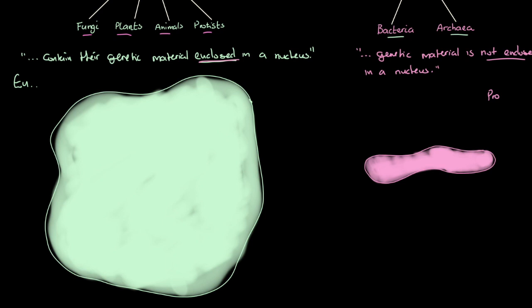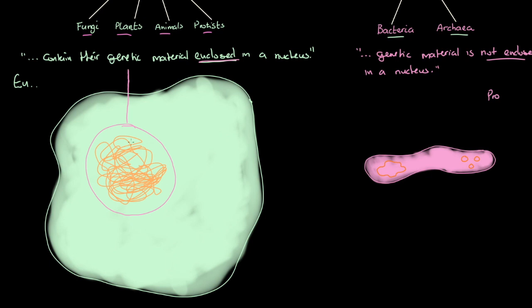At this next stage we find our distinction, because now we incorporate DNA. On the left, our genetic material — orange strands of DNA — is surrounded by a membrane, giving what we call a membrane-bound nucleus. In our bacterial cell on the right, we have a DNA loop that is not surrounded by a nuclear membrane. We also have additional rings of DNA which we refer to as plasmids.